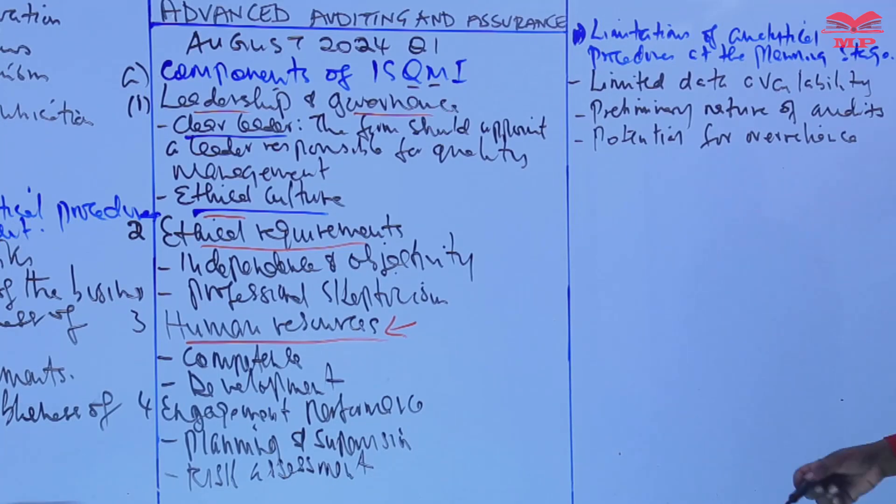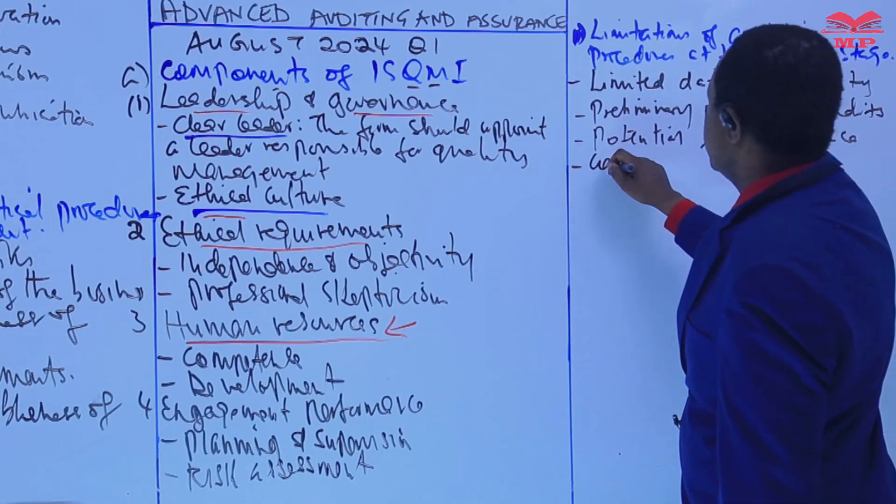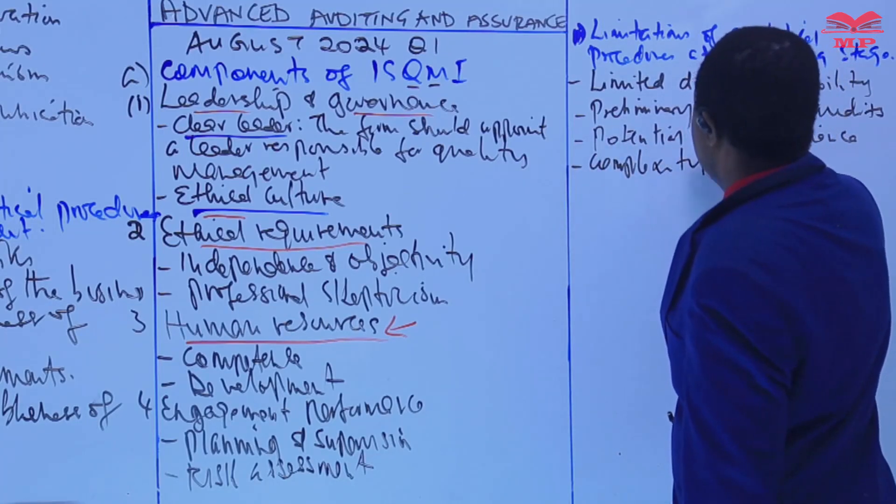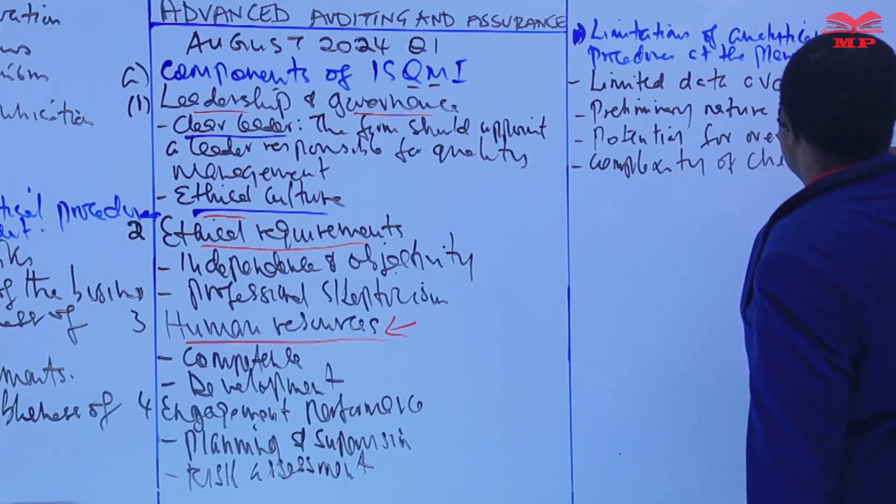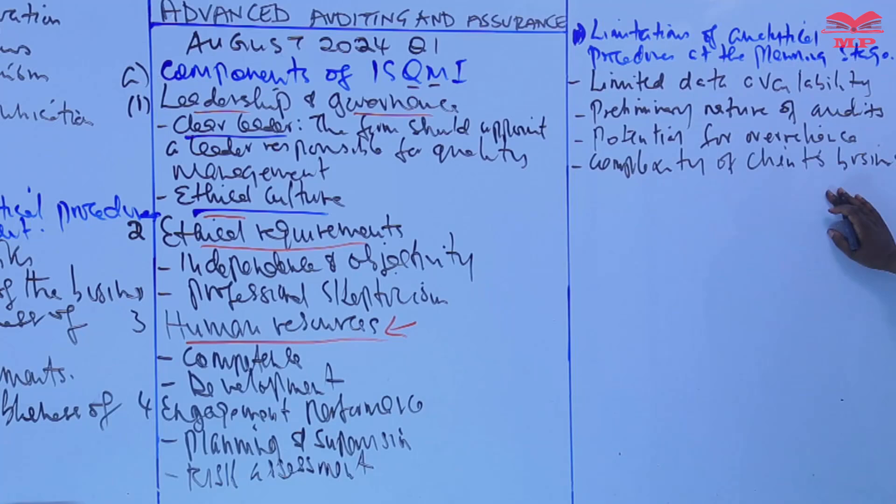Another limitation could be complexity of clients' business. Now for complex clients with multiple business segments or operations, if you're auditing a client with multiple operating segments or branches or subsidiaries, it can be difficult to develop appropriate analytical procedures at the planning stage.